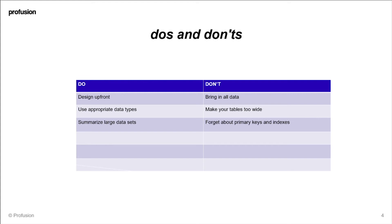Don't forget about primary keys and indexes. You should try and add indexes to any columns that have a vast array of unique values, and also think about what columns are commonly used for querying and data reconciliation activities. Adding indexes when the tables are created rather than down the line can save a lot of time for those tasks when rolling out.